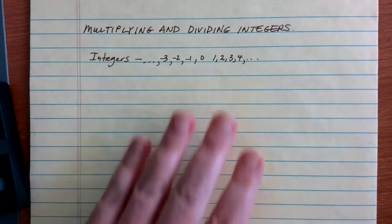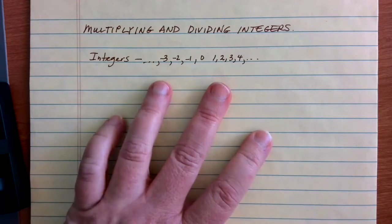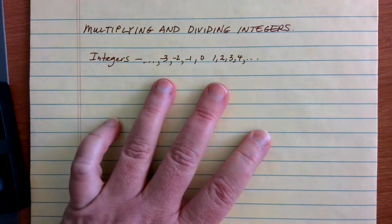When we talk about integers, then, we're talking about all the positive counting numbers and all of their negative counting number counterparts.